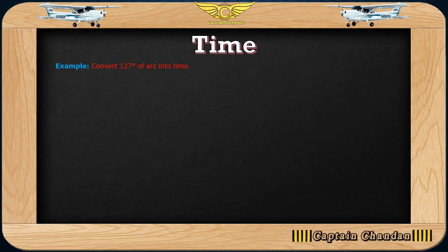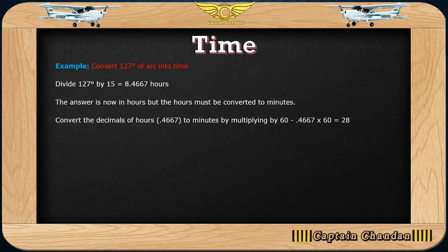For example, convert 127 degrees of arc into time — here 127 degrees is a longitude, either east or west. The first step is very simple: divide 127 by 15 degrees. This gives you a time format. You can use a scientific calculator for easy calculation, and this will help you solve numerical problems based on time difference.